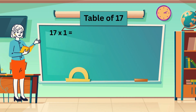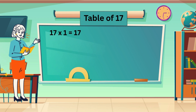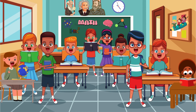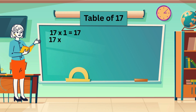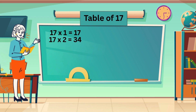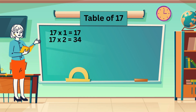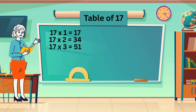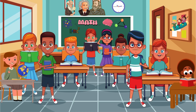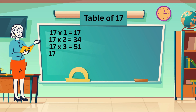Table of 17. 17 ones are 17. 17 twos are 34. 17 threes are 51. 17 fours are 68.